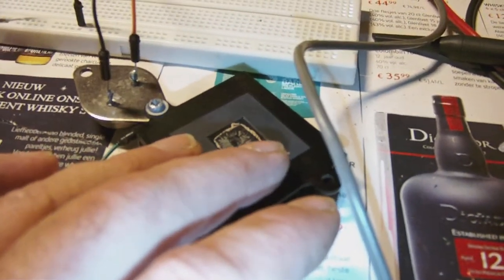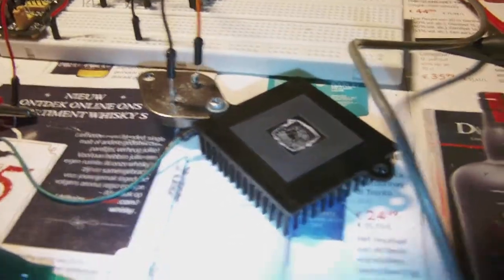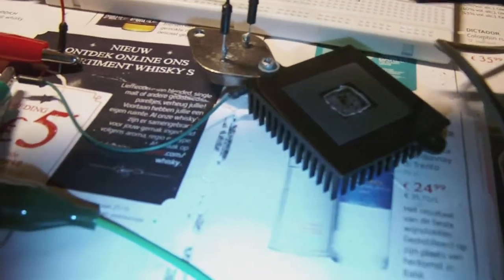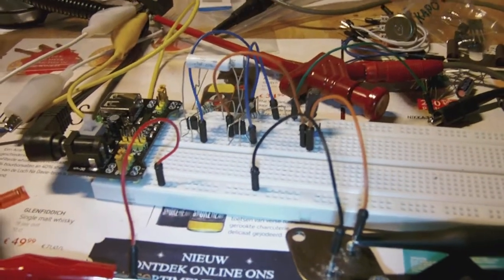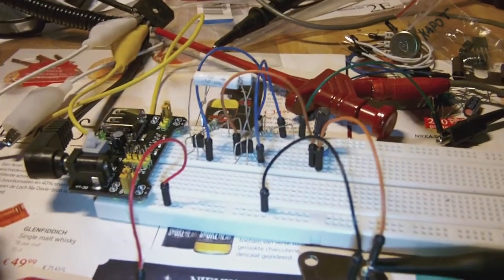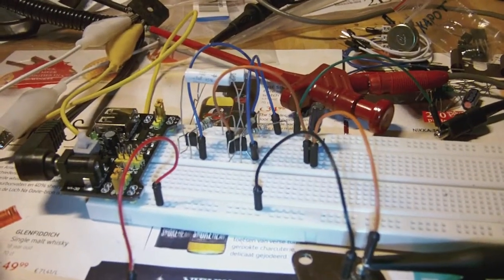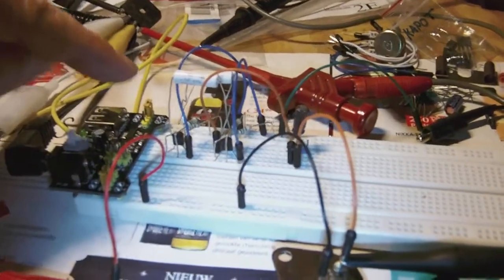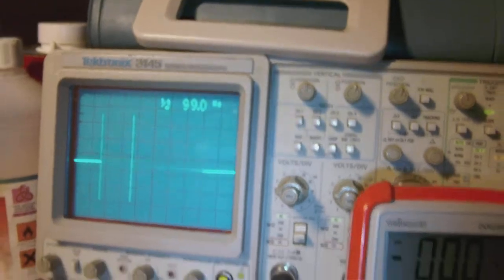I switched to this power transistor because I think the BD139 was a bit too light to drive the transformer. I also tweaked the frequency of the oscillator, which you remember is an astable multivibrator oscillator, or in other words a square wave oscillator, and I doubled the frequency almost to 100 Hertz. Actually it's more like 99 Hertz.